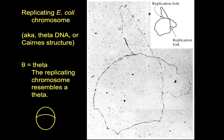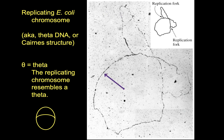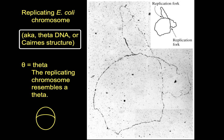There is the replication fork here and here, visible in this electron micrograph of a radioactively labeled replicating chromosome. The two newly synthesized DNAs are visible over here, and this is the rest of the molecule yet to be replicated. It's also called the Cairns structure, because it was originally found by John Cairns.